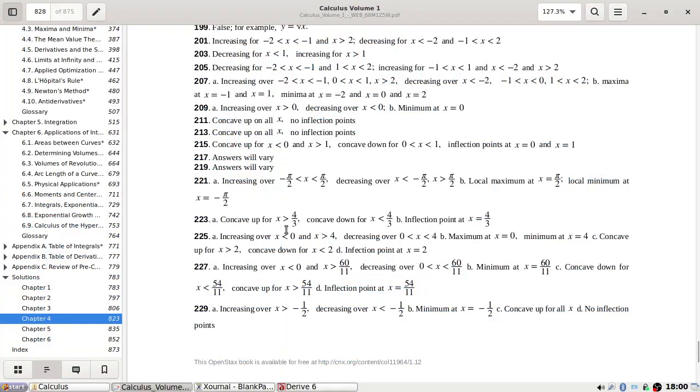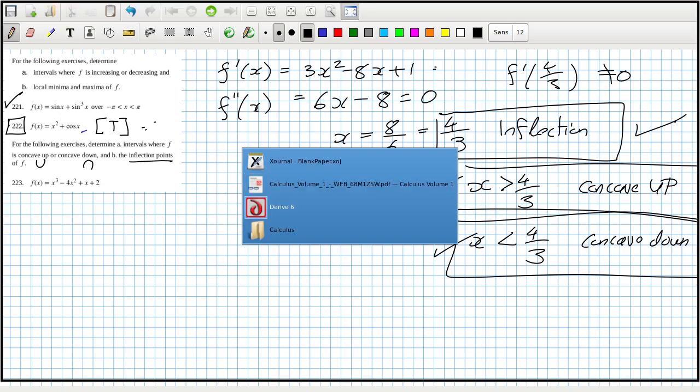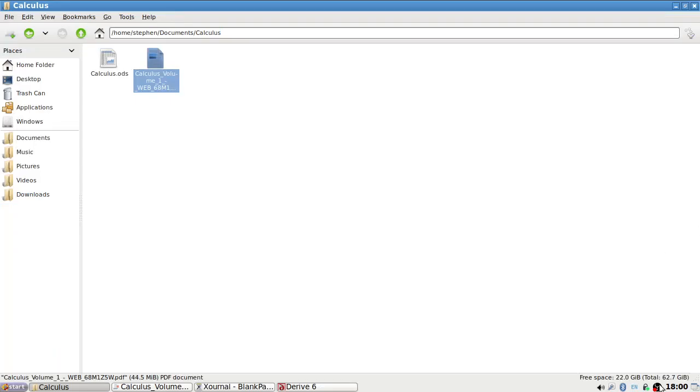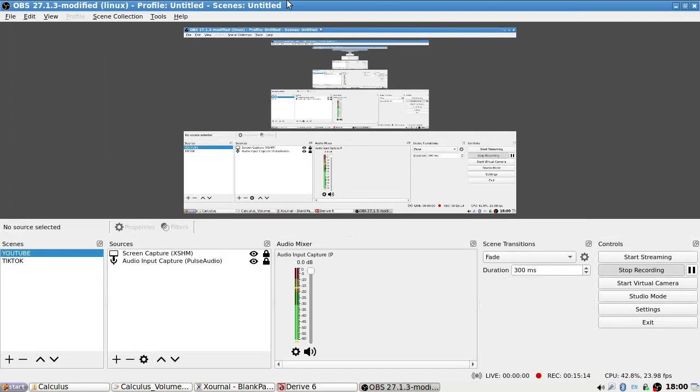223, concave up, yep. Concave down, yep. Inflection point at 4 over 3, yep. Okay, okay, we'll leave it back.